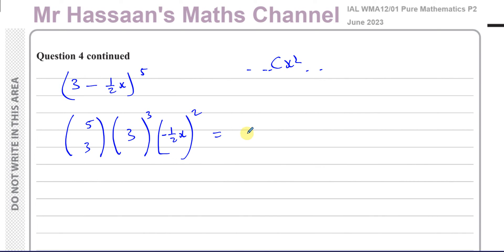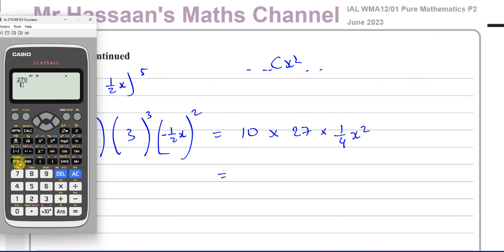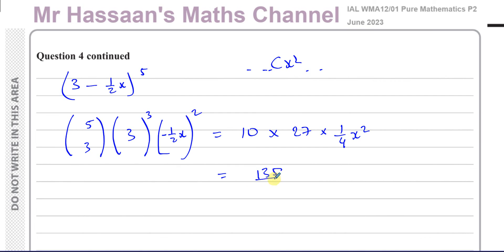So that's going to give me 5C3, as we said before, that's 10, times 3 cubed, which is 27, times negative a half squared, which is going to be a quarter, x squared. So that's going to give me 270 over 4, which is 135 over 2, x squared. So therefore we can say C is equal to 135 over 2.